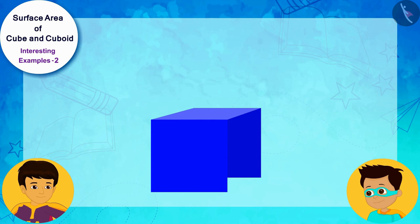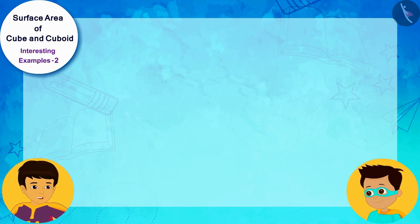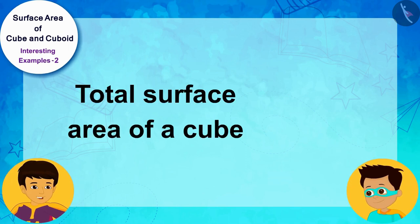Yeah, good. The formula for the total surface area of a cube is 6 times the square of the measurement of the sides of the cube.